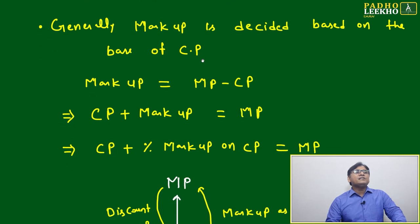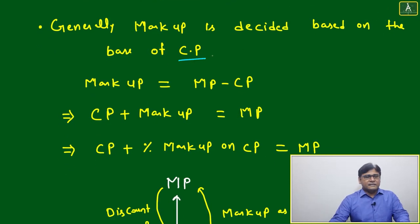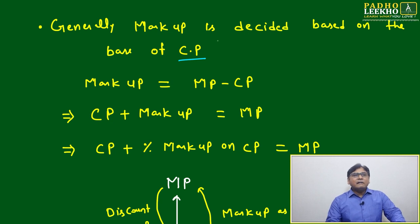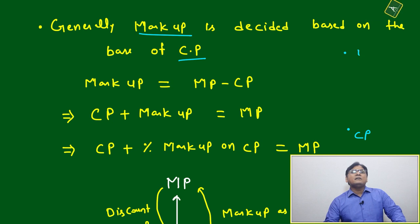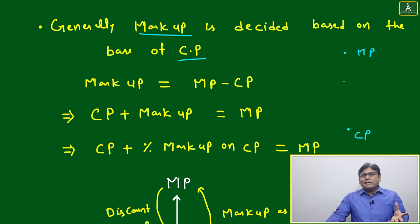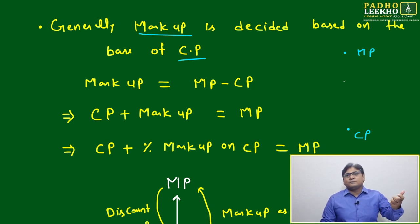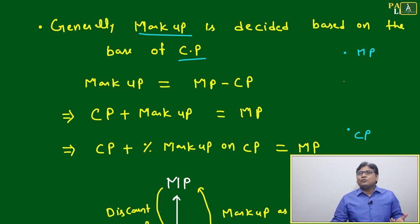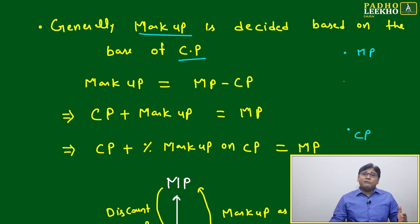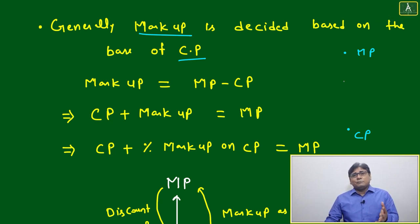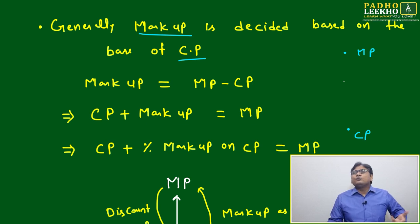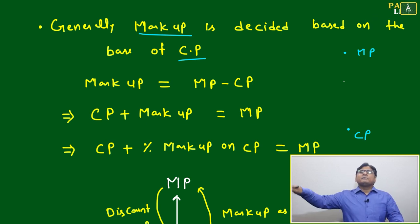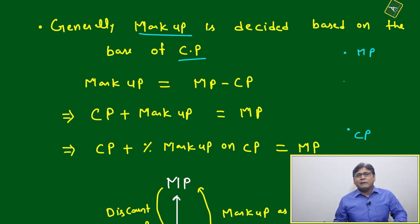Generally, markup is decided based on cost price. Markup means your cost price is here and your intention is to sell higher. You can't decide it in an abrupt way — like a pen costs 12 rupees and you want to sell at 85 rupees. That is not the way of financial calculation, because everything is decided based on financial constraints and certain goals. You can't do pricing randomly; a business will never run like that.